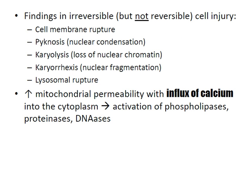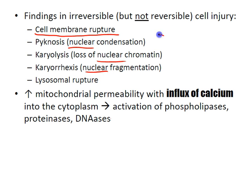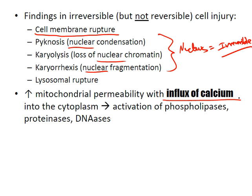Findings in irreversible but not reversible cellular injury include: cell membrane rupture; pyknosis (nuclear condensation); karyolysis (loss of nuclear chromatin); karyorrhexis (nuclear fragmentation) — once you start affecting the nucleus, injury is irreversible. Also, lysosomal rupture releases acid hydrolases into the cytosol. Increased mitochondrial permeability with calcium influx activates phospholipases, proteinases, and DNAases.